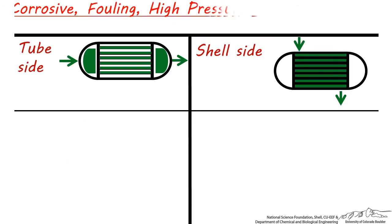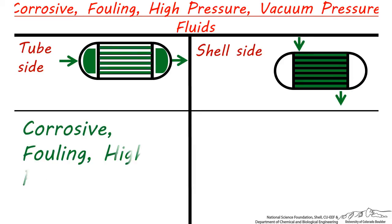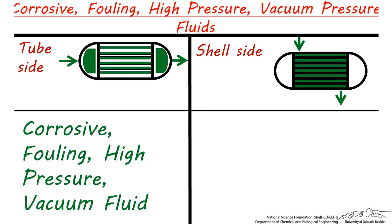Because the tubes can accommodate extreme pressure and reactive conditions better, corrosive, fouling, high, or vacuum pressure fluids are usually sent through the tubes, and the other fluid should be sent through the shell-side. So the stream with the more extreme pressure or physical property conditions should probably be designated as tube-side, especially if the stream is prone to react with materials and form a scale or deposit.